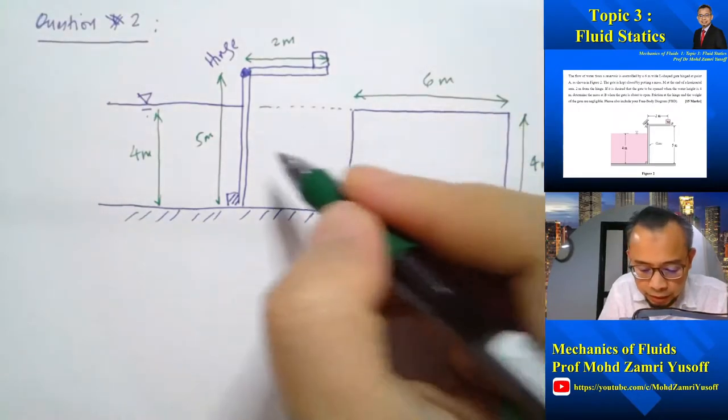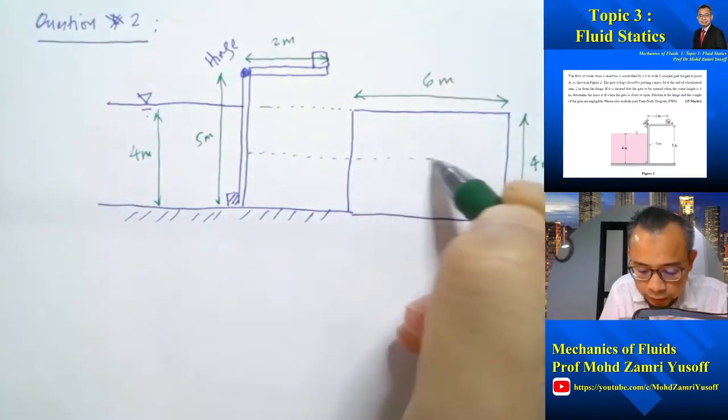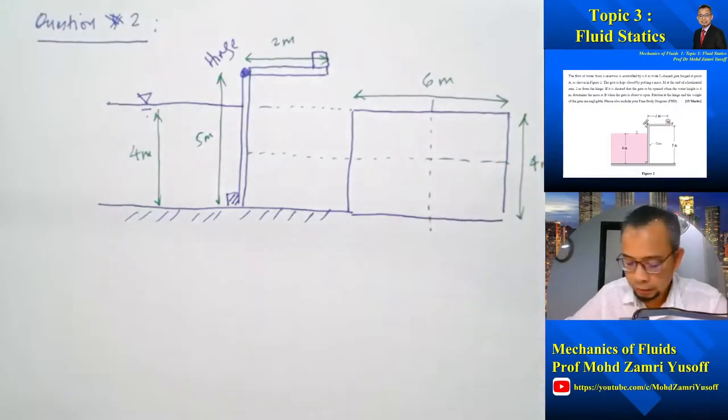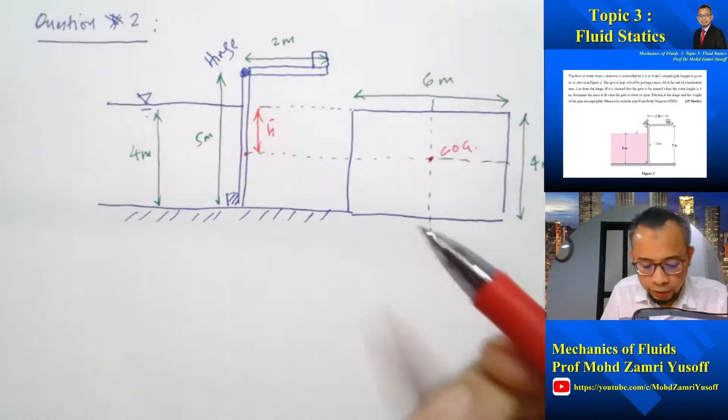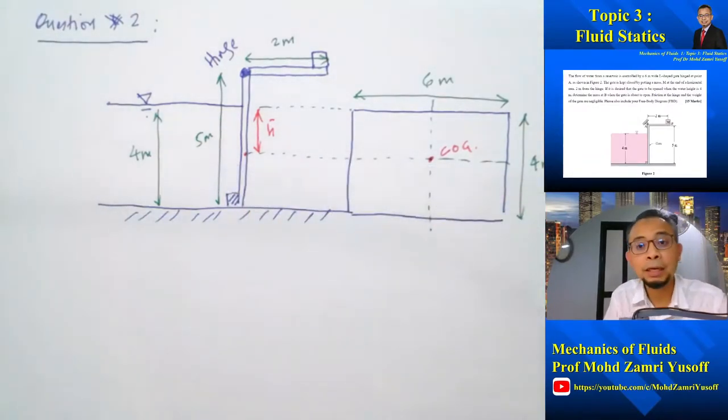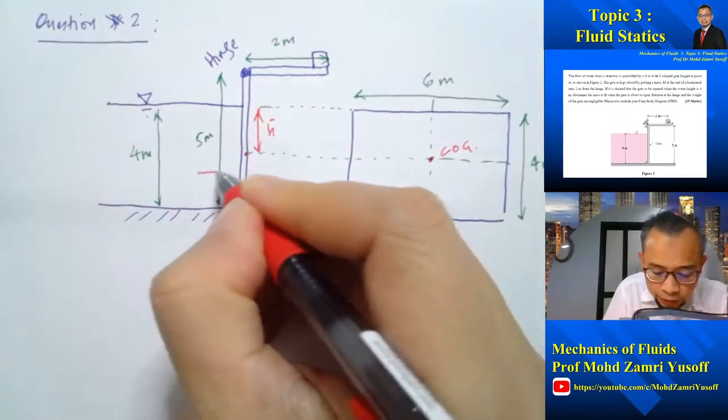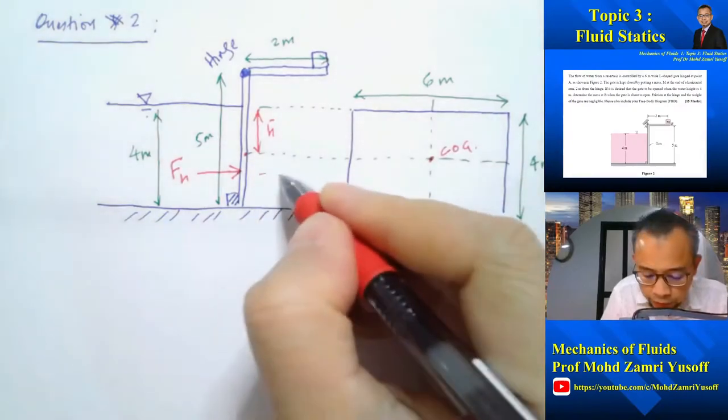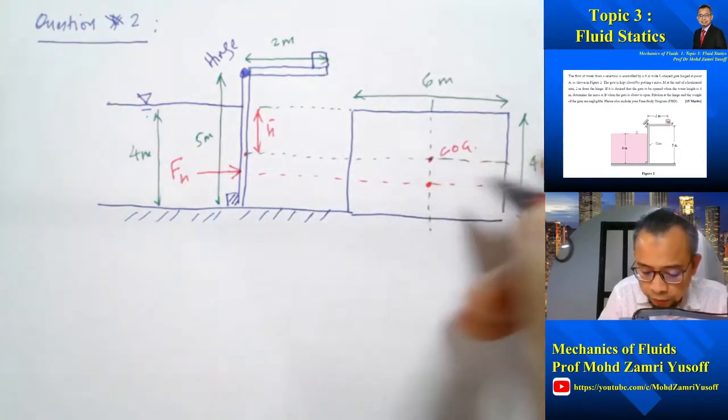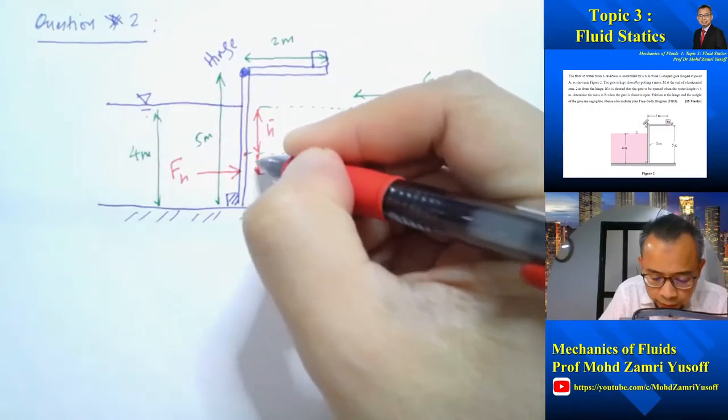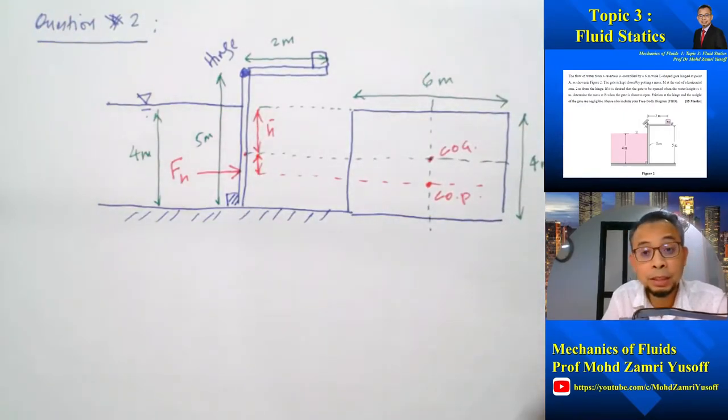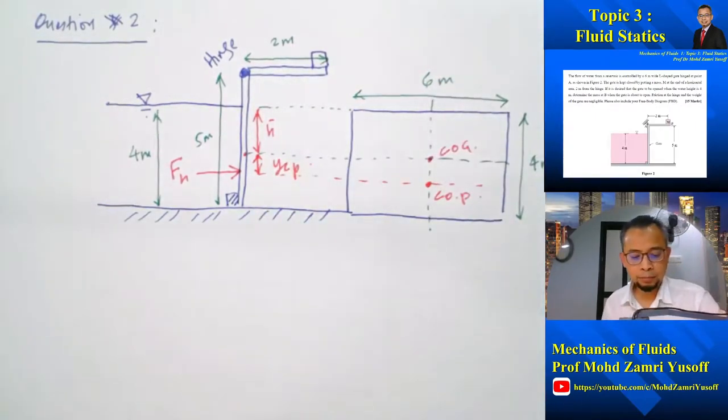The first thing is, we need to determine where is the centroid, COG. This is the COG, and that means that this is our h bar. And we know that the hydrostatic force will be acting through the COP, which is slightly below the COG. So the hydrostatic force will be acting here, I call that one FH, acting through this point here which we call COP, center of pressure. And the slant distance, in this case the vertical distance between the COG and COP, is our YC.